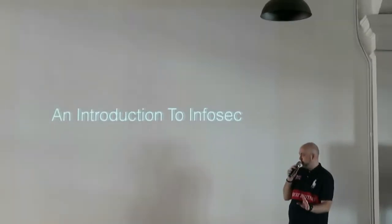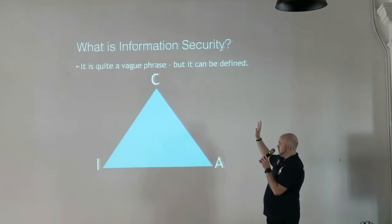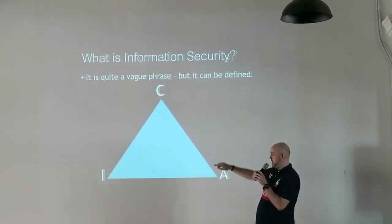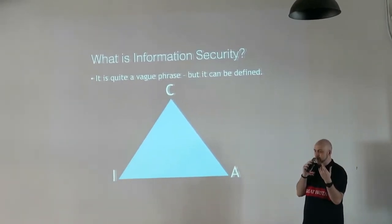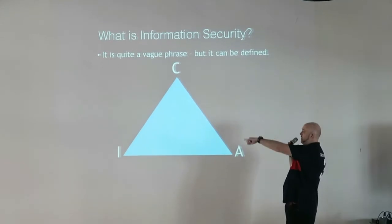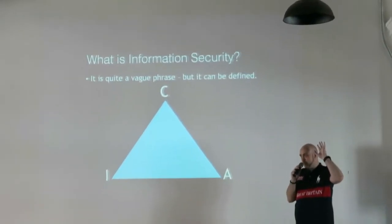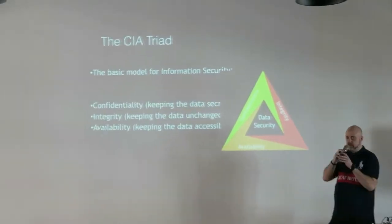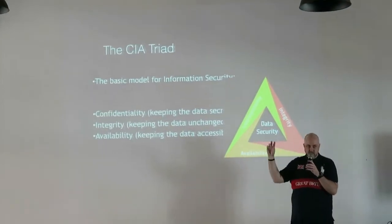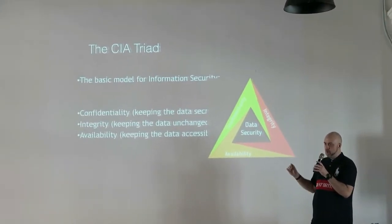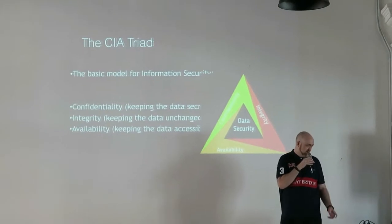I'm going to start out really basic, just with an introduction. Define what is information security. Information security is defined by this triad - the CIA triad. CIA stands for confidentiality, integrity, and availability. These are the three things that you need all the time to say that you have a secure data set, a secure piece of information, or a secure app. Confidentiality is basically keeping the data secret. Integrity is keeping the data unchanged. And availability is keeping the data accessible.